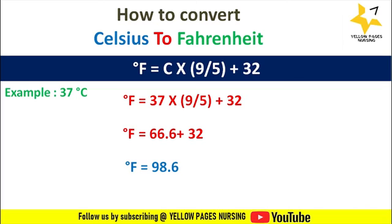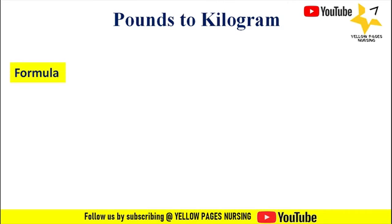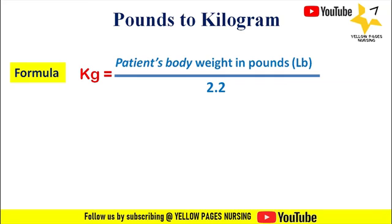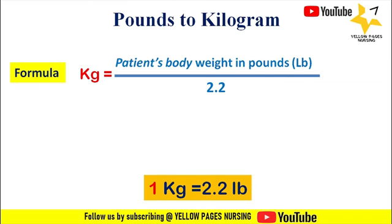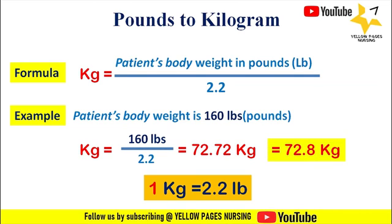Next comes conversion of pounds to kilograms. To convert a patient's weight in pounds to kilograms, the formula is: kilograms = lb ÷ 2.2. Remember, 1 kilogram equals 2.2 lb. For example, a patient's body weight is 160 lb. So kilograms = 160 ÷ 2.2, which gives the answer 72.7 kg.